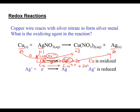When losing electrons, I should show them on the right hand side of the arrow as free electrons. The charge is balanced - I have a two plus and two minus for those two electrons. In oxidation processes, show the electrons on the right. In reduction processes where we're gaining electrons, we show them on the left hand side of the arrow.